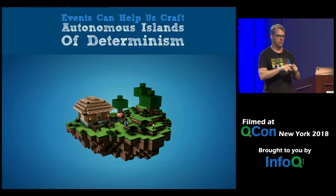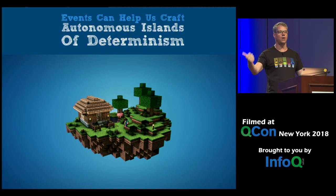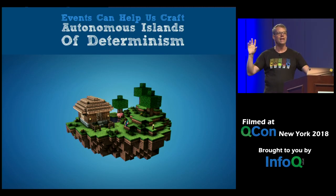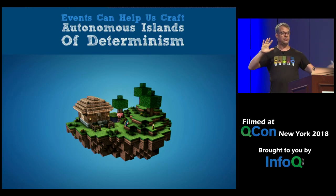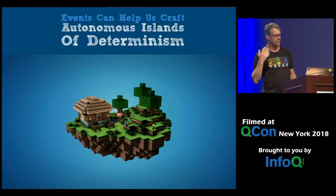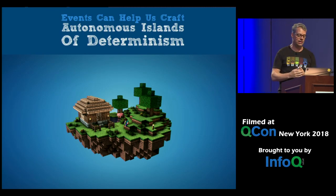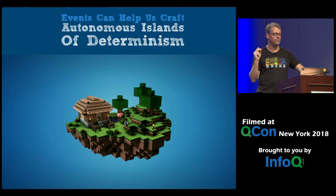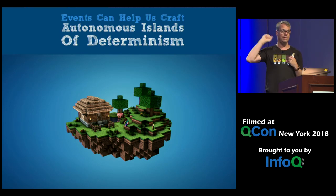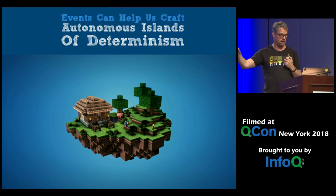Events can really help us craft autonomous islands of determinism that shield us from this crazy ocean of non-determinism — where you're safe, where you can use mutable state, where things are strongly consistent and fully deterministic, where you can live under the illusion that time is absolute and there's a single 'now.' To do that, we need to craft well-defined protocols — which events you accept and which events you emit, which facts you accept and which facts you emit.